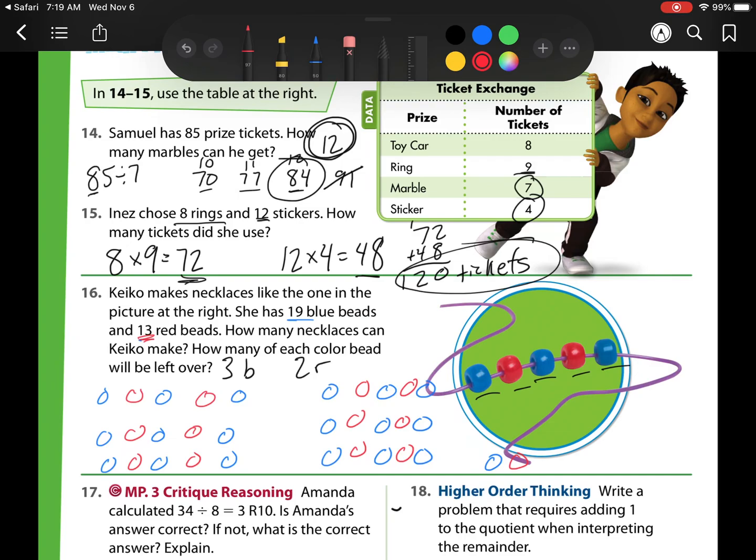So I'll notice these are my leftovers because they cannot make a complete necklace. So now we can answer our question. How many necklaces can she make? She can make 1, 2, 3, 4, 5, 6. She can make 6 necklaces. And again, I'm going to circle my answer. How many colors of each beads? She will have 1 red and 1 blue left over.